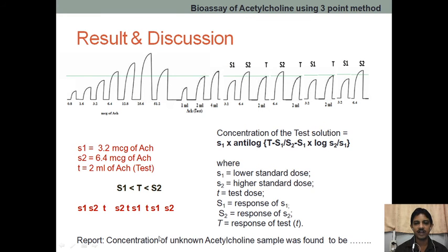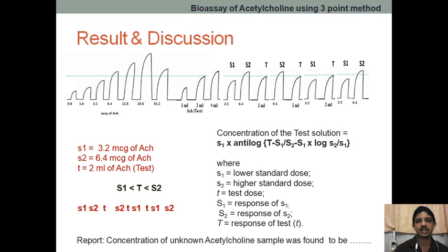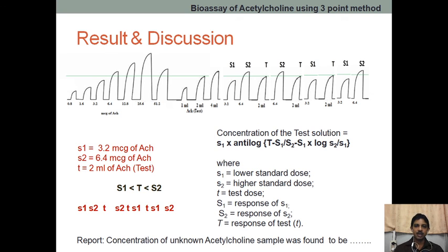After finding the concentration, the concentration of the unknown acetylcholine sample was found in micrograms per ml. This is the formula through which we calculate in the three-point bioassay method. I hope you have understood how we are calculating and how you need to perform. First perform the experiment as shown, find the heights, and then using this formula you can find the concentration.